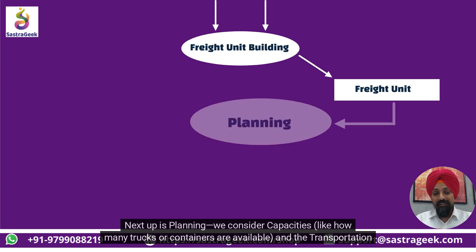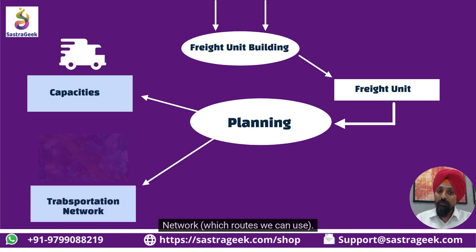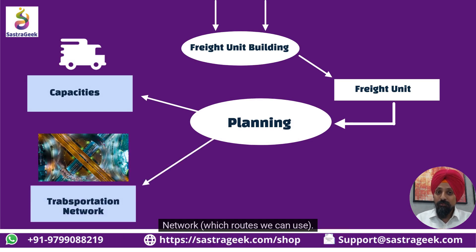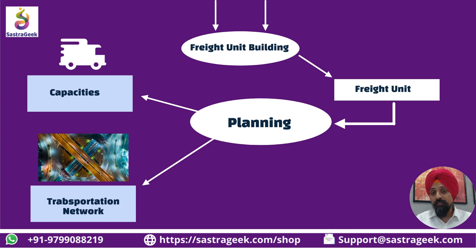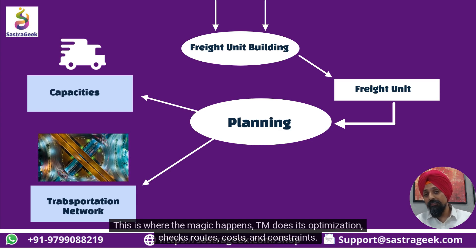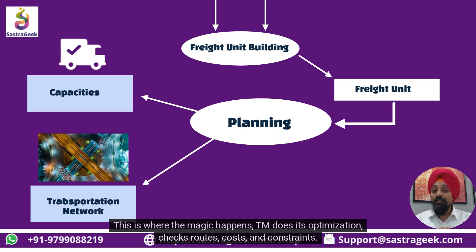Next up is planning. We consider capacities — like how many trucks or containers are available — and the transportation network, which routes we can use. We then plan the best way to ship these freight units. This is where the magic happens: TM does its optimization, checks routes, costs, and constraints.